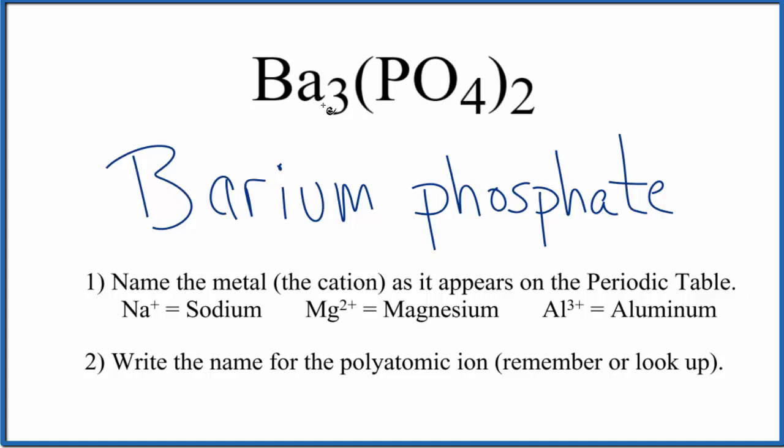Because barium's in group 2, it's not a transition metal, so we don't need to put any Roman numerals or anything like that, just barium phosphate.